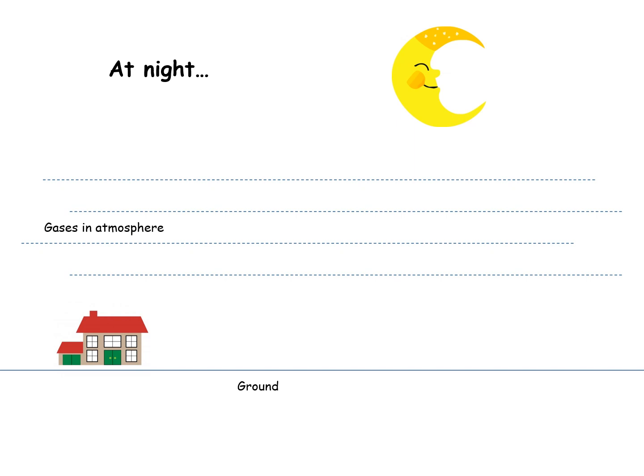Now, at nighttime, the Earth, the ground, is warmer than the air, and so heat comes out of the ground and tries to escape outwards into space. But this heat comes out of the ground as longwave radiation, not shortwave radiation.